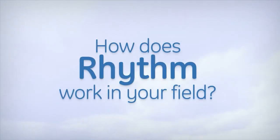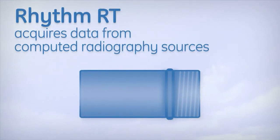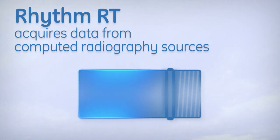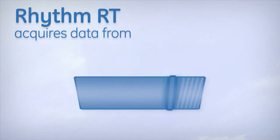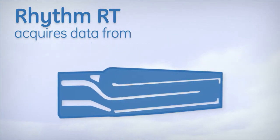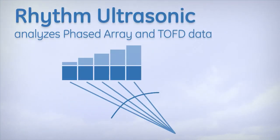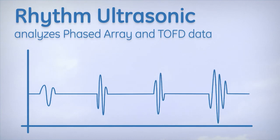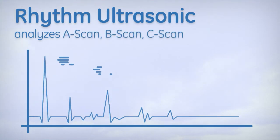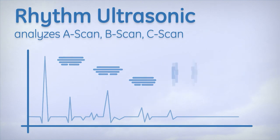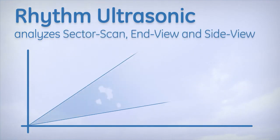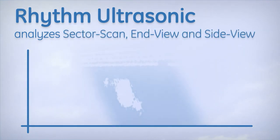Rhythm RT acquires and analyzes data from computed radiography sources, digital detector arrays, or from film digitizers. Rhythm Ultrasonic analyzes phased array and TOFD data. It also displays different views, including A-scan, B-scan, C-scan, sector scan, end view, and side view.